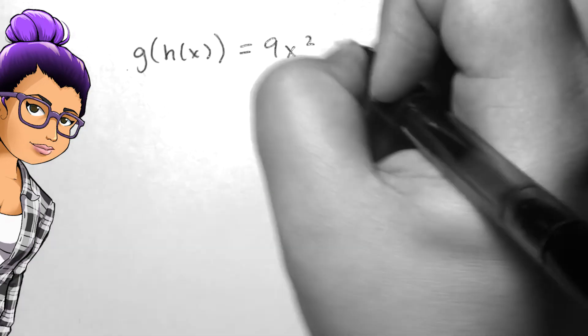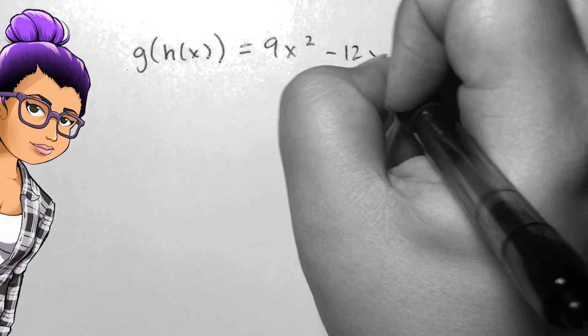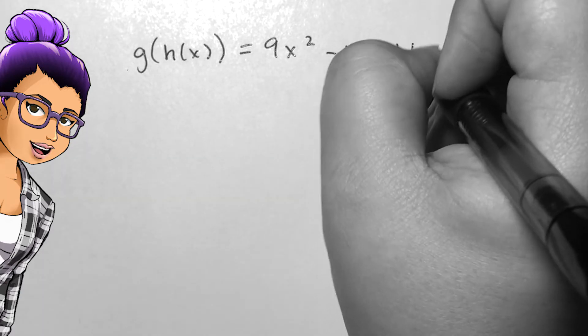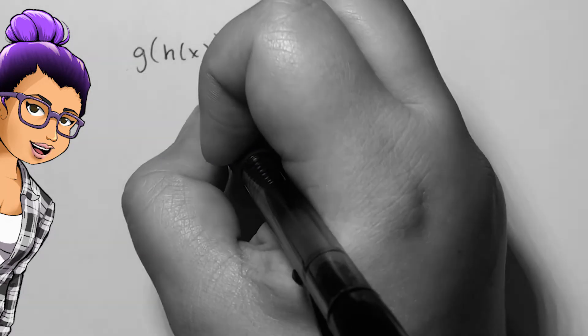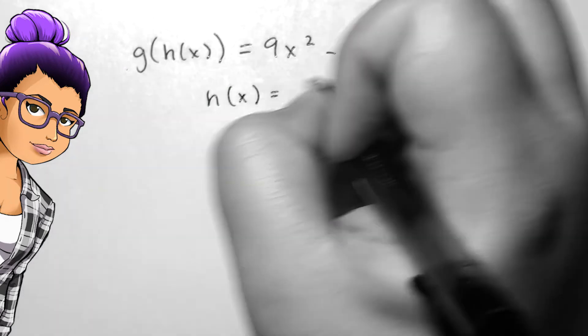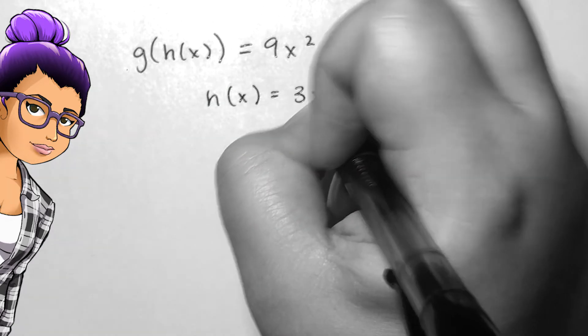For example, if g of h of x is 9x squared minus 12x plus 6, h of x is 3x, and we want to find g of x, then we'll need to find a 3x everywhere we see an x happen.